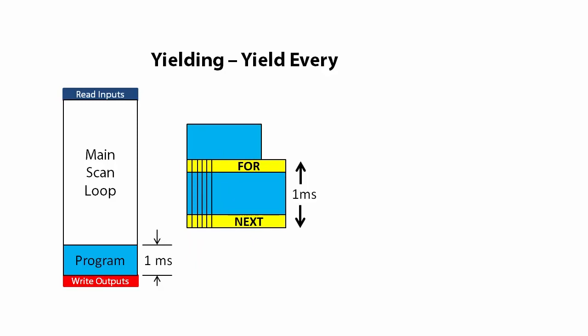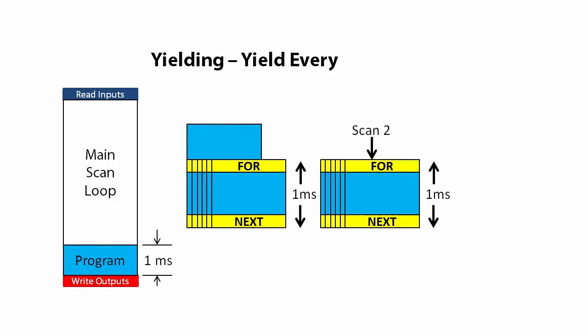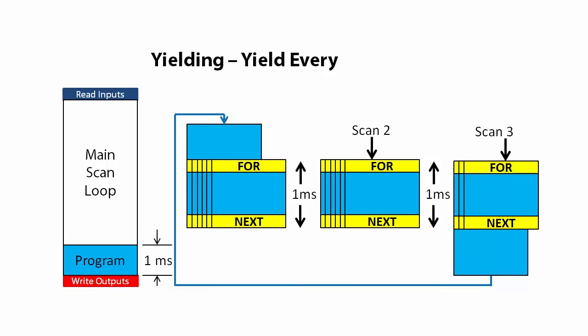Then it will yield at the next yielding instruction, which is usually the bottom of a loop. On the next scan it just picks up wherever it left off, runs as many loop iterations as it can in the 1000 microseconds and then yields again.